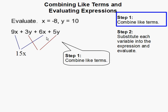Then 3y and 5y are another set of like terms. They have the same variable. 3y plus 5y gets us 8y. Now our expression simplifies to 15x plus 8y.